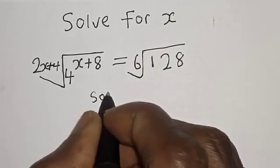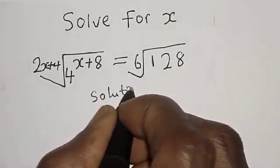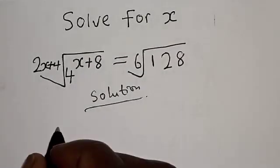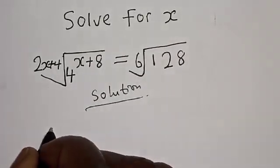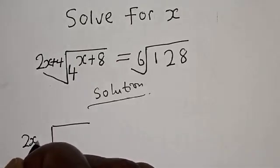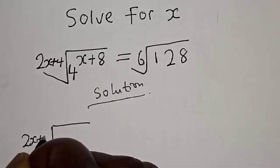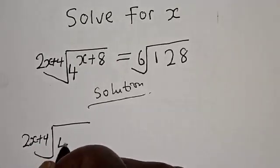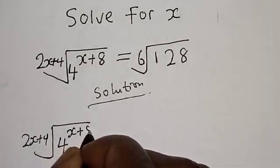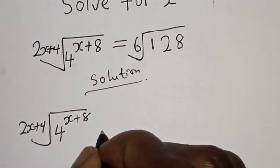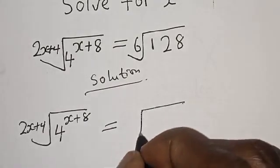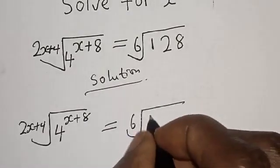Solution. We have the given equation: the (2x+4)th root of 4 raised to power x plus 8 is equal to the 6th root of 128.